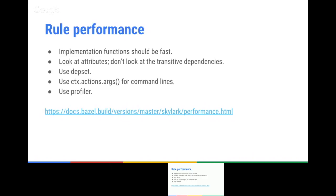We have a data structure called depset, which is optimized just for merging things together. It takes just one operation to merge all dependencies together and you don't have to iterate over it. Use depset instead of list if you want to gather dependencies. We recently added functions to generate the command line. When you gather all your dependencies in the depset, you don't want to expand it during the analysis phase. If you use ctx.actions.args, it's a lazy data structure that gets expanded only in the execution phase, so the depset is not expanded during analysis.